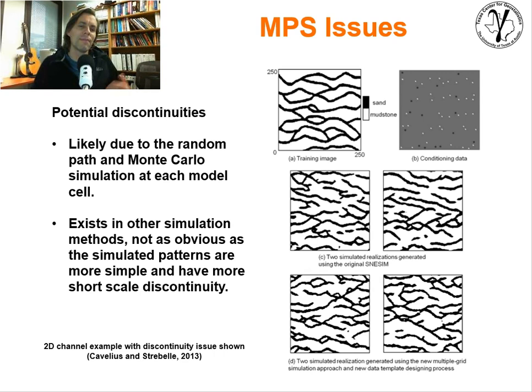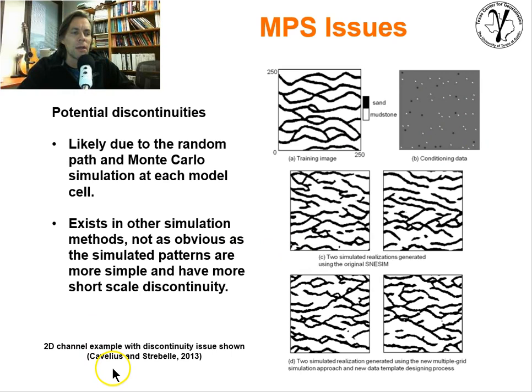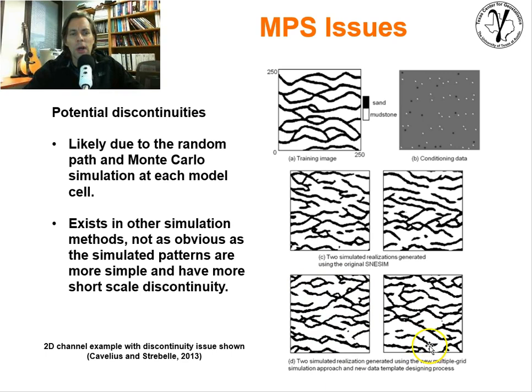What are the problems with MPS? Everything has disadvantages. First, there could be discontinuities. As Caers and Strebelle showed in their 2013 paper, putting in a training image with conditioning data can result in systematic discontinuities — things get broken up. They modified the MPS approach to try to improve this, and to some degree there have been improvements, but it's not perfect.